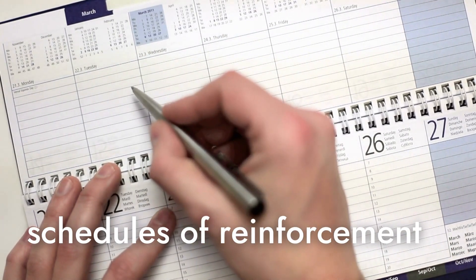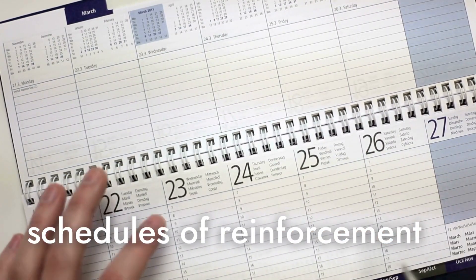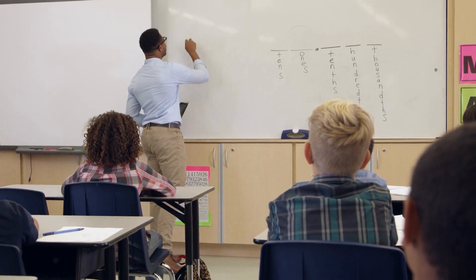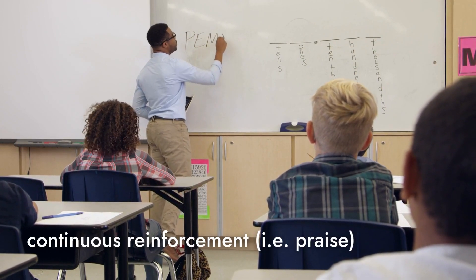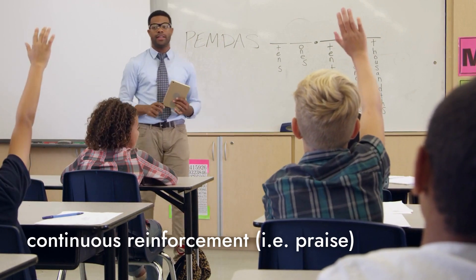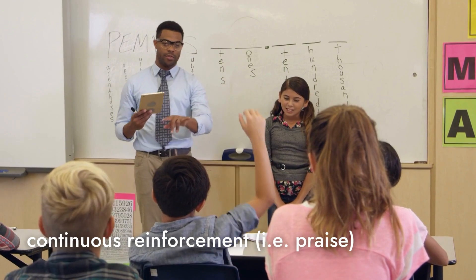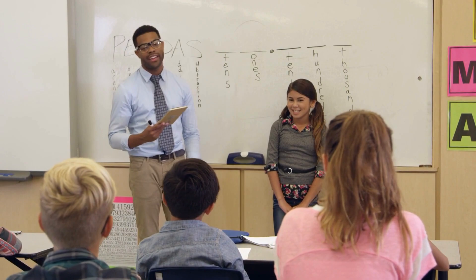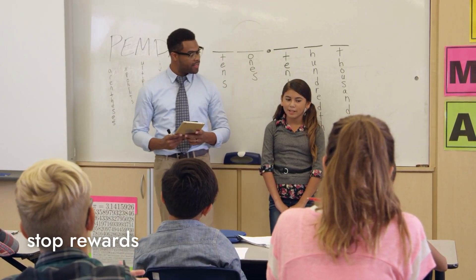Another way Skinner's ideas are used is through schedules of reinforcement. If you change how often a behavior gets rewarded, the behavior can change too. For example, when a teacher introduces a new topic, they might use continuous reinforcement like praise at first to keep students interested, especially if the topic is tough. This can motivate students and keep them focused, but it's a short-term plan. The goal is to gradually use intermittent schedules, then eventually stop relying on rewards altogether.